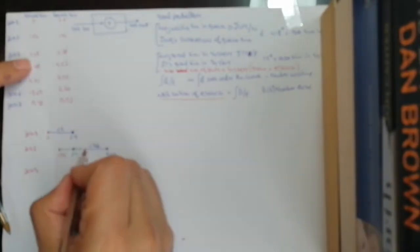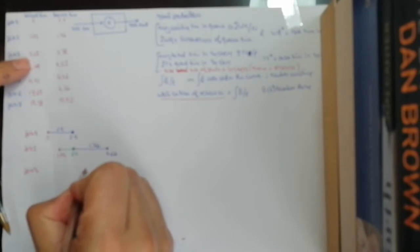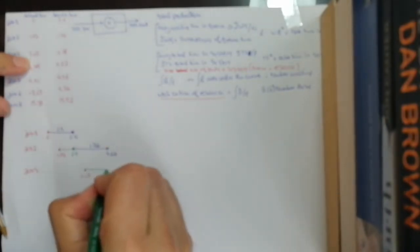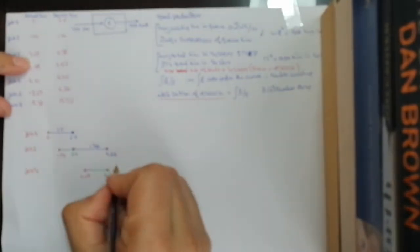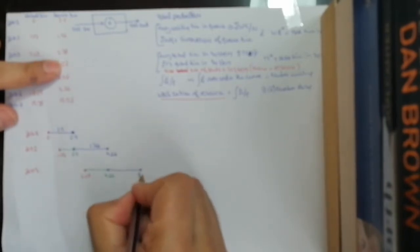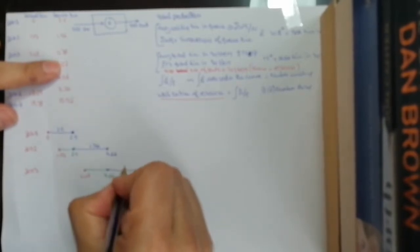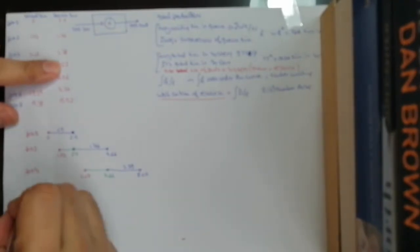Job 3 arrives at 3.08 — shown approximately here on the timeline. It waits (shown in green) until 4.66, then stays in the system for a service time of 3.39, leaving at 8.05.